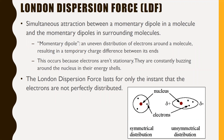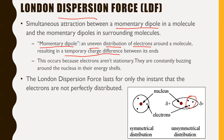London dispersion forces are the next type of intermolecular force — the simultaneous attraction between a momentary dipole in a molecule and the momentary dipoles in surrounding molecules. A momentary dipole is an uneven distribution of electrons around a molecule resulting in a temporary charge difference between its ends. When electrons are buzzing around an atom, they aren't moving in lockstep — there are moments when all electrons are pulled to one side, creating a temporary negative and positive end.